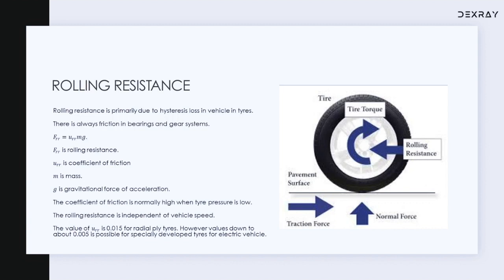The equation for rolling resistance is: Frr = coefficient of friction × m × g, where the coefficient of friction is a constant, m is the mass of the vehicle, and g is the acceleration due to gravity. It is important to mention that rolling resistance is independent of the velocity of the vehicle. Some people think that if the vehicle moves faster, rolling resistance increases — that is a misconception. Regarding the coefficient of friction, it depends upon the type of tire and the air pressure; the value usually lies between 0 and 1.